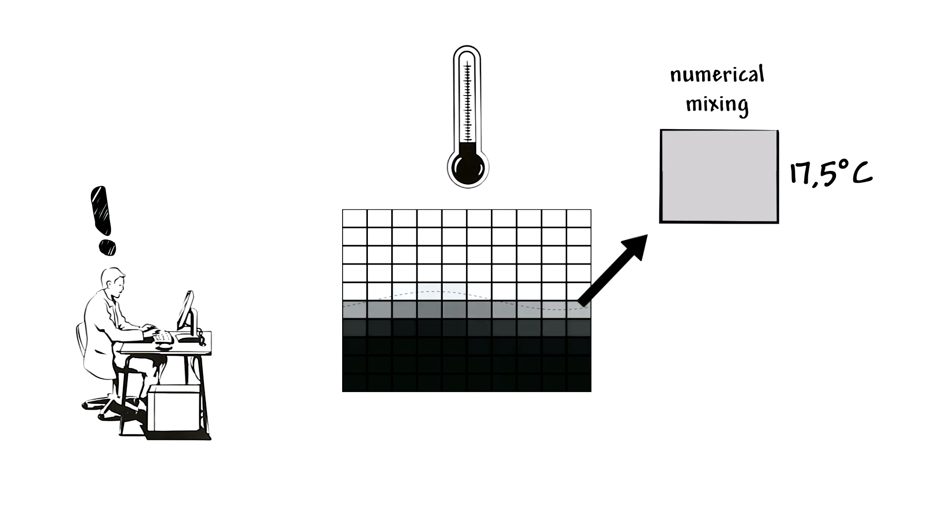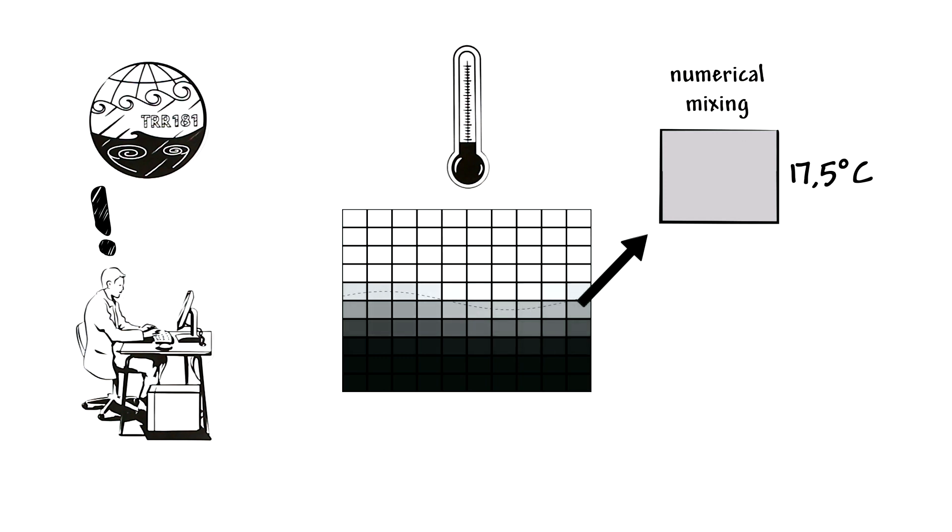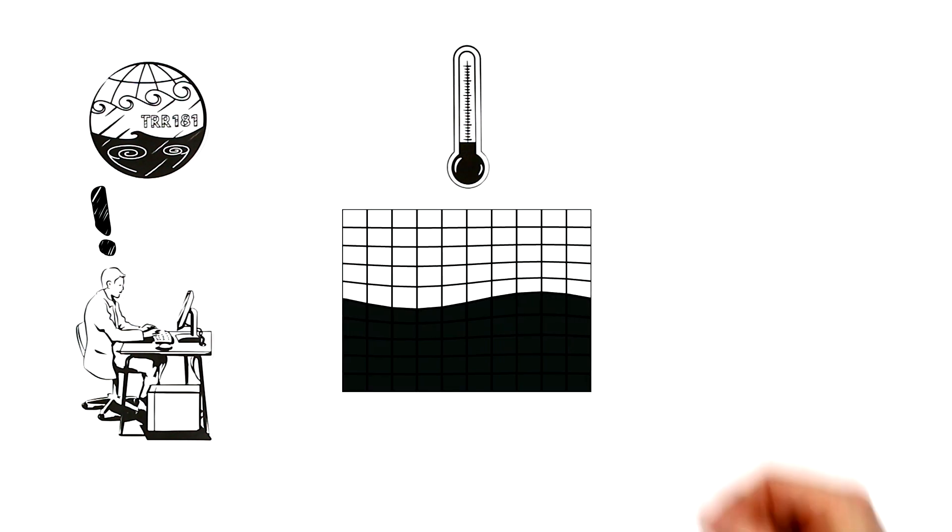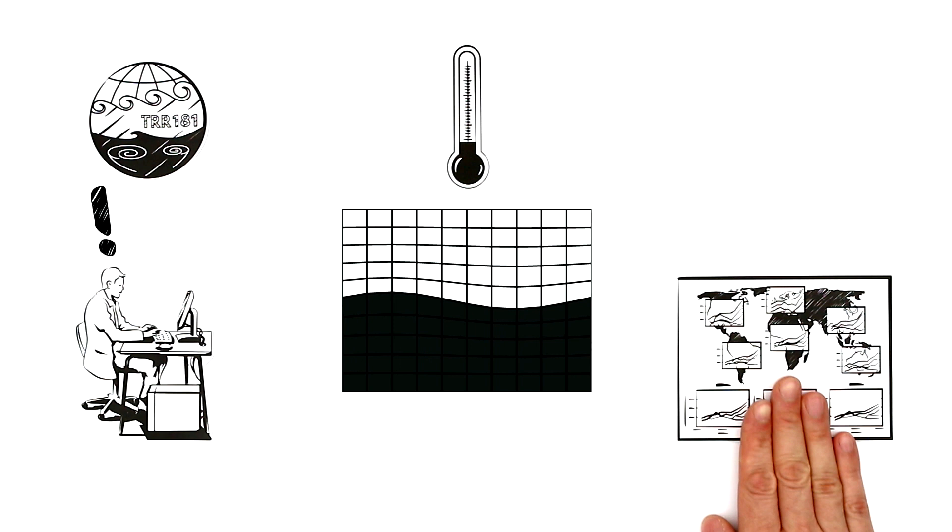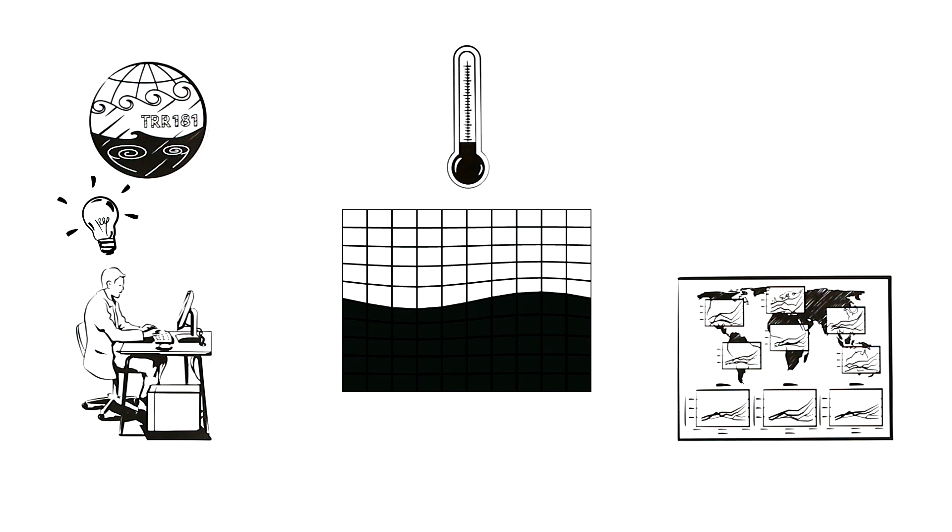Because numerical mixing violates the energy balance, researchers of the Collaborative Research Centre focus on approaches that minimize numerical mixing in climate models. They use, for example, adaptive grids that move with the flow. These improved climate models allow for more precise predictions and more reliable research of natural and man-made impacts on climate.